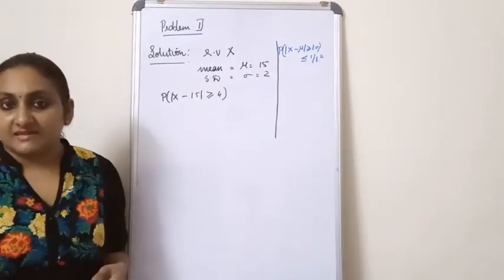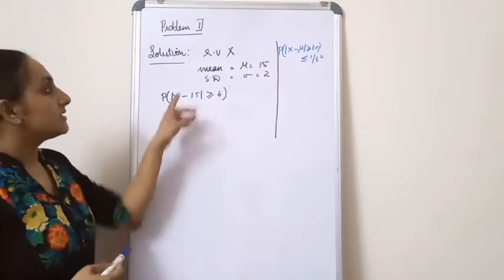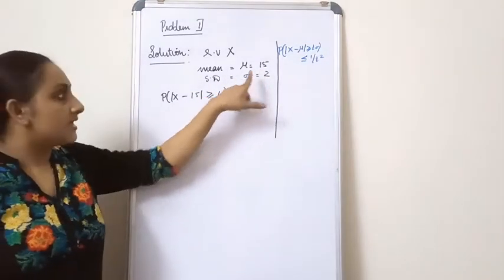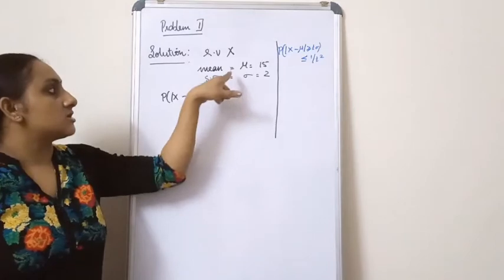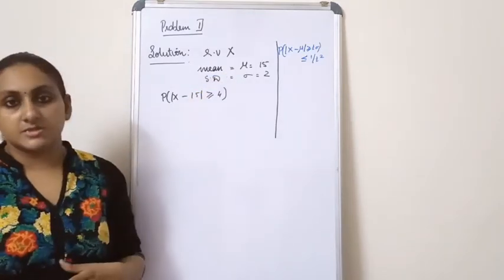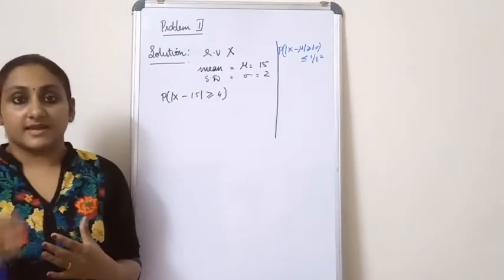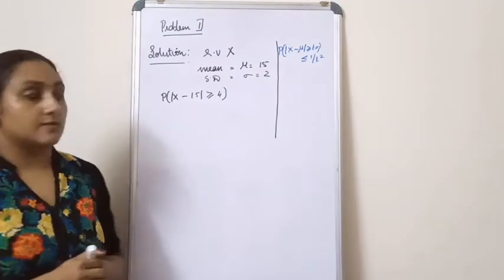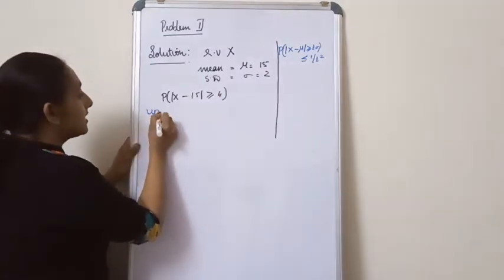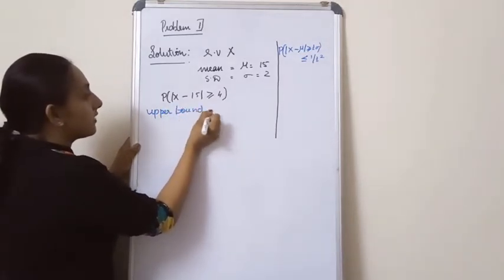In the program, it states that you have a random variable X. The mean of the random variable is 50 and the standard deviation, or sigma, is equal to 2. These are some of the information we get from the question, and you are asked to find out an upper bound for this probability.